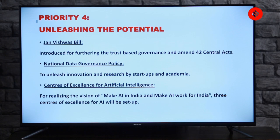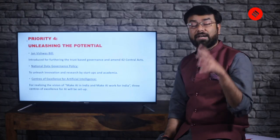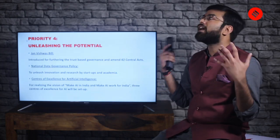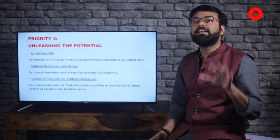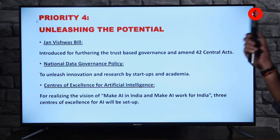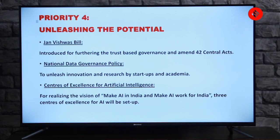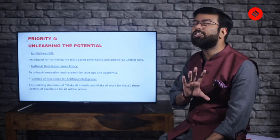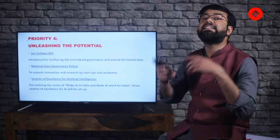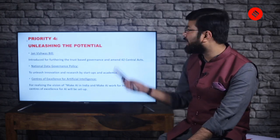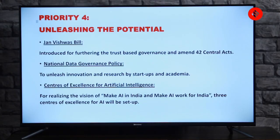Priority four is unleashing the potential. The budget tries to address that the country and various sectors have a lot of potential that needs to be utilized, and state support is needed. The JanVishwas Bill is introduced for furthering trust-based governance and to amend 42 central acts. Without going into too much detail, this is a governance-based bill so that people can have trust in citizen-centric governance — that trust factor is very important.